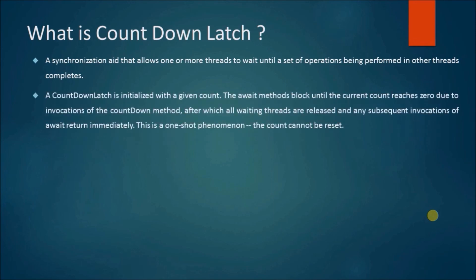A countdown latch is initialized with a given count. The await methods block until the current count reaches zero due to invocations of the countdown method, after which all waiting threads are released and any subsequent invocations of await return immediately. This is a one-shot phenomenon — the count cannot be reset.